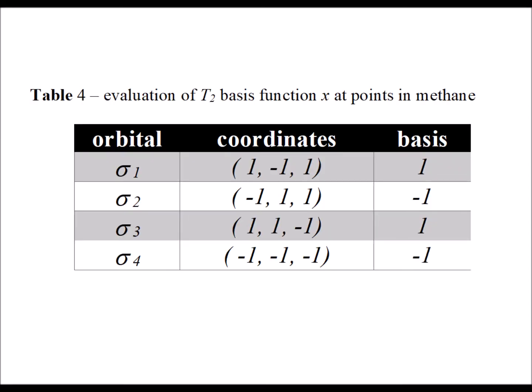In table 4, we evaluate the first of our T2 basis functions, the function x, so we get coefficients of 1, minus 1, 1, minus 1. These are the coefficients for the atomic orbitals on hydrogen in our linear combination of atomic orbitals to make a molecular orbital.